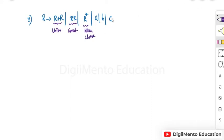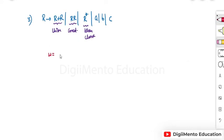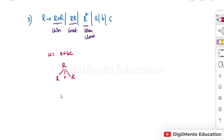Now we have to check whether this grammar is ambiguous or not. Let's try to generate something like a plus bc. So we will get something like r plus r using this production.